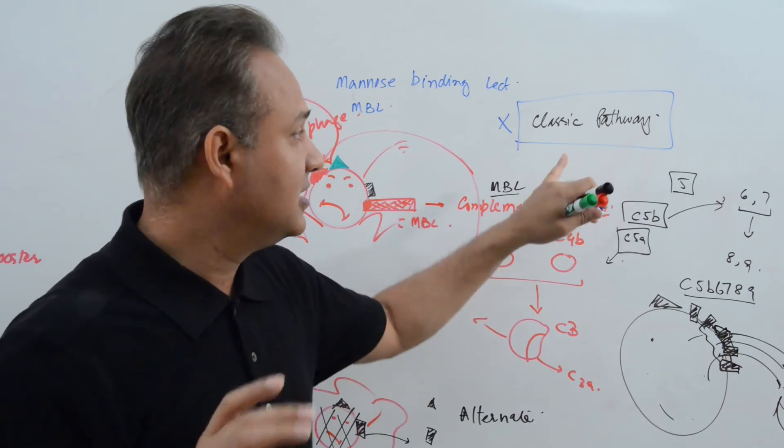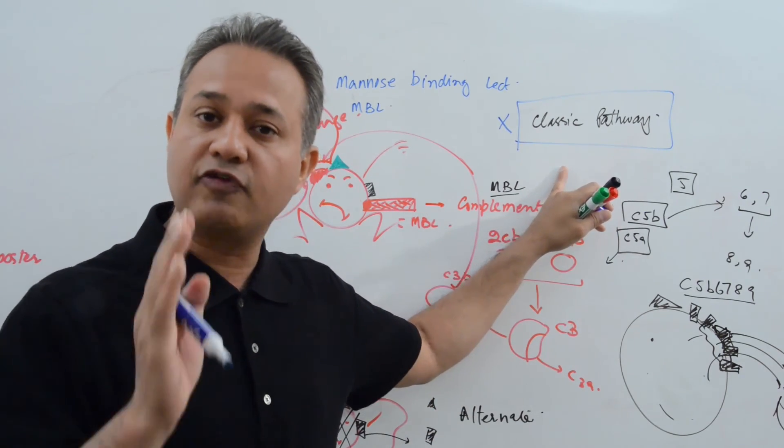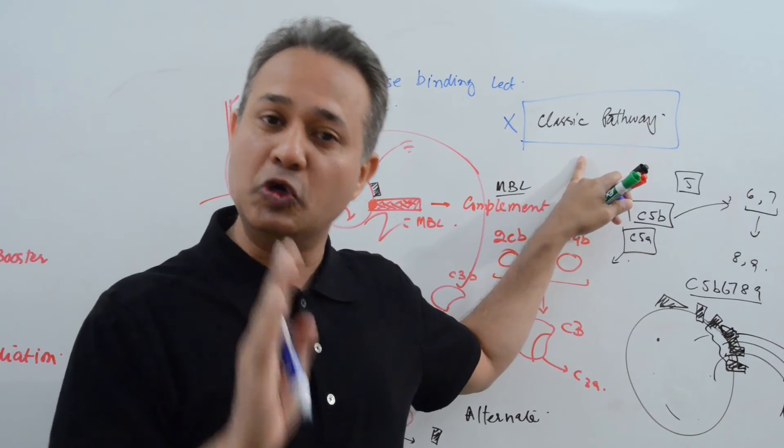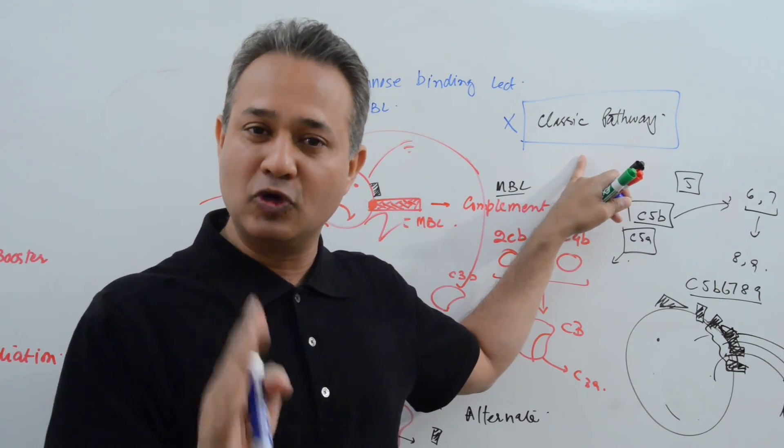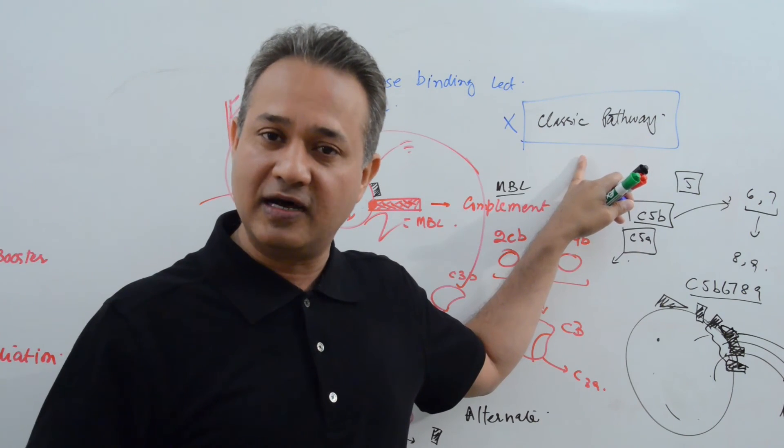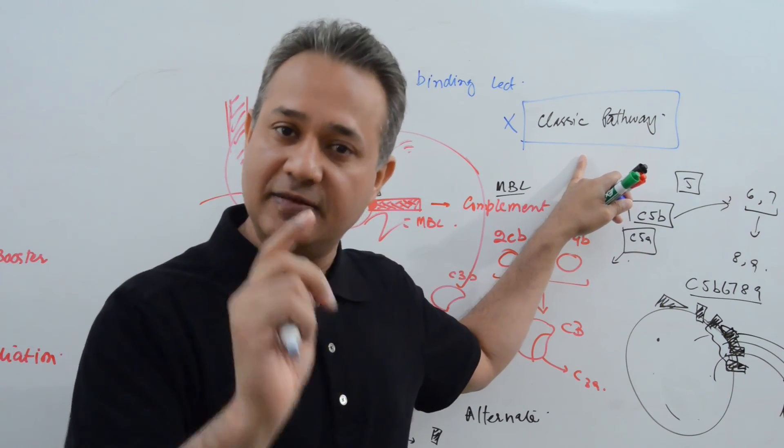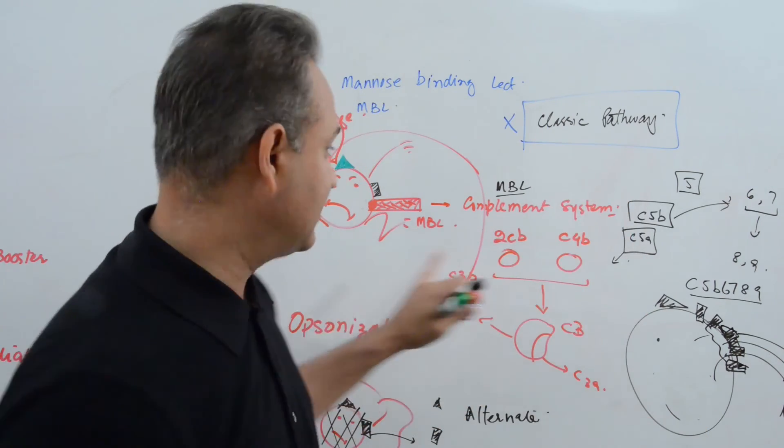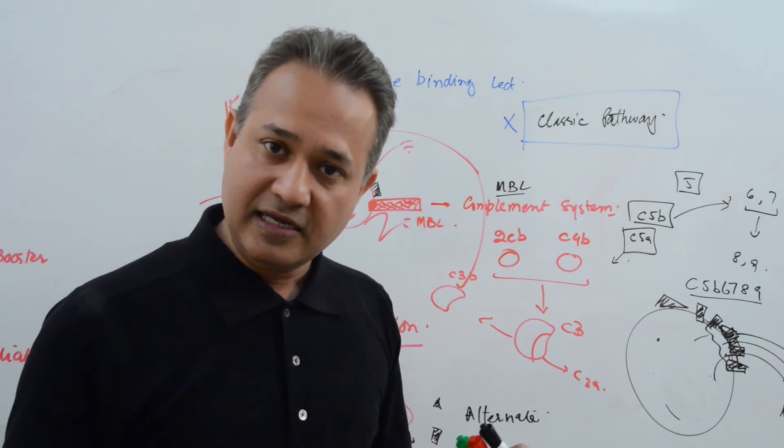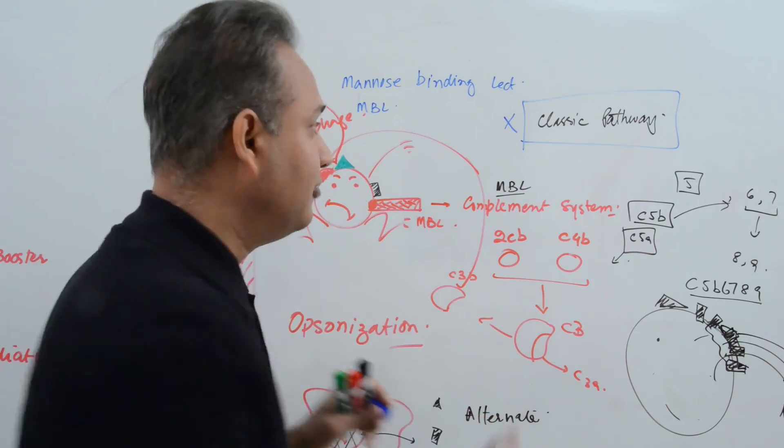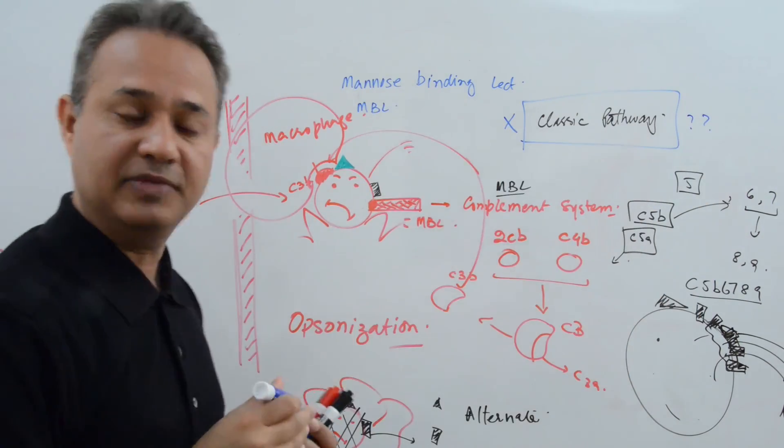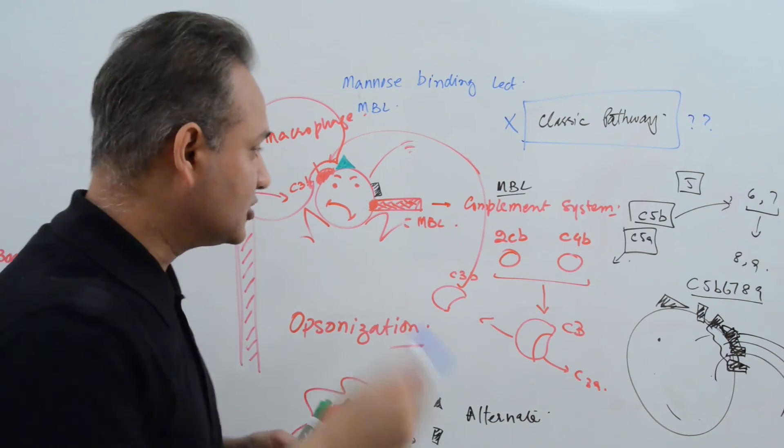Why not? Because in it, the classic pathway is part of acquired arm. Why? Because classic pathway needs immunoglobulin. And immunoglobulin can only come from the acquired arm when the B cells become active. B cells become active when the T helper cells make them active. T helper cells will be activated when the macrophages make them active. So considering that, we are still figuring out when will the classic pathway become active.